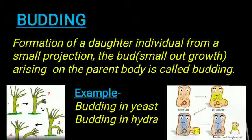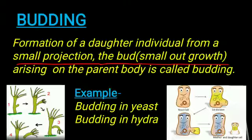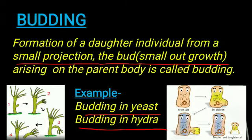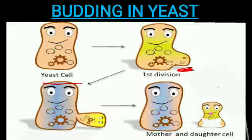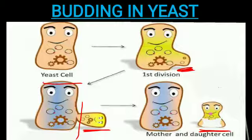The next type is Budding — the formation of a daughter individual from a small projection or outgrowth called a bud. The best examples are budding in yeast and budding in Hydra. In yeast, which is a unicellular organism, a small projection or outgrowth (bud) arises from the parent body. This bud matures and finally detaches from the parent body, giving rise to a new individual — this process is known as budding.